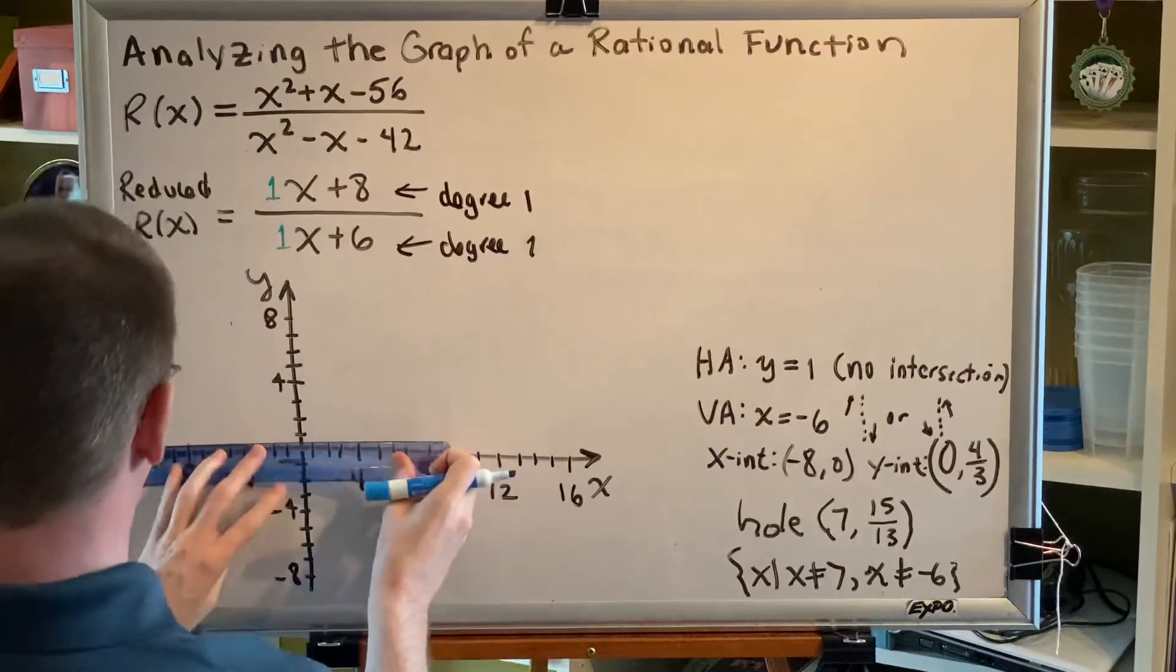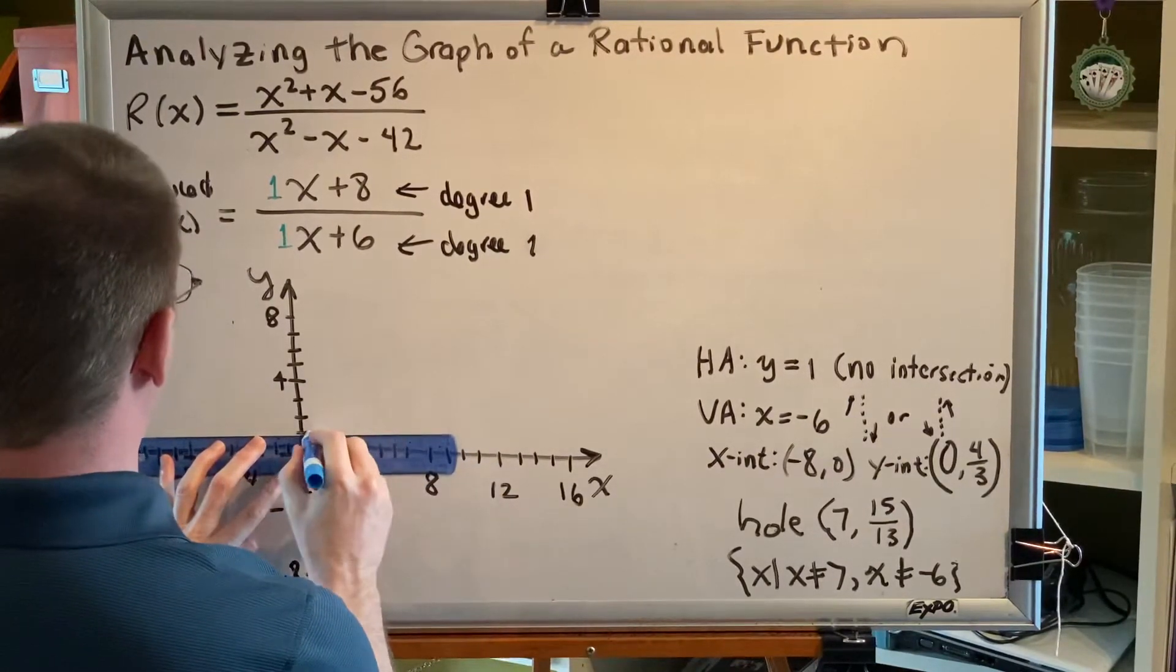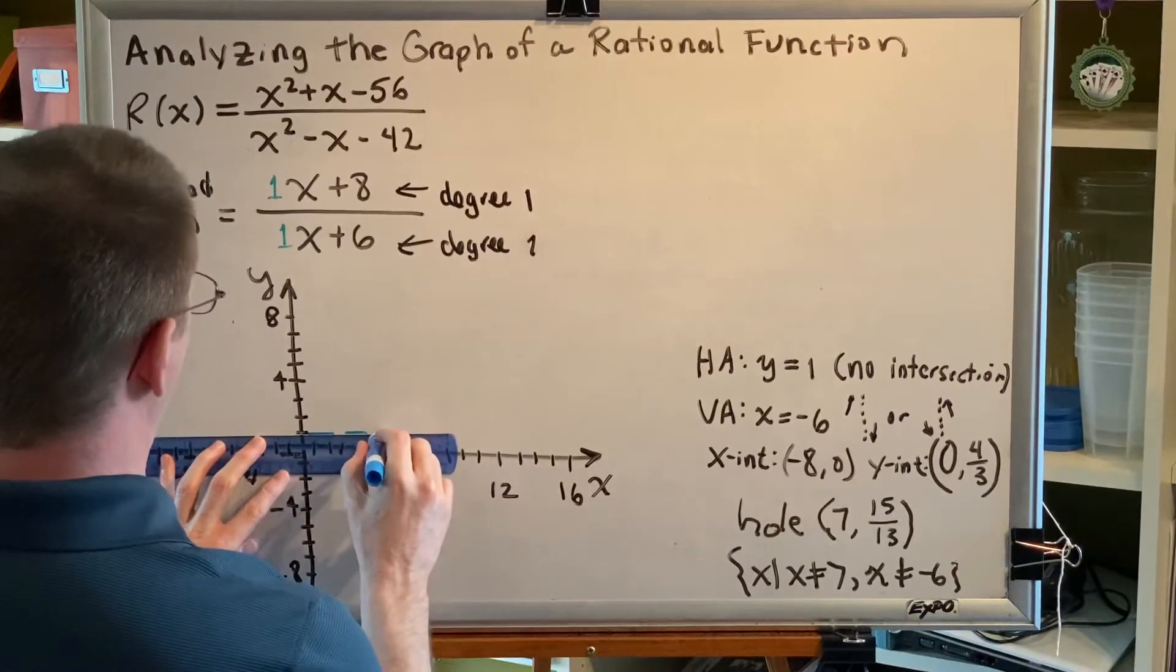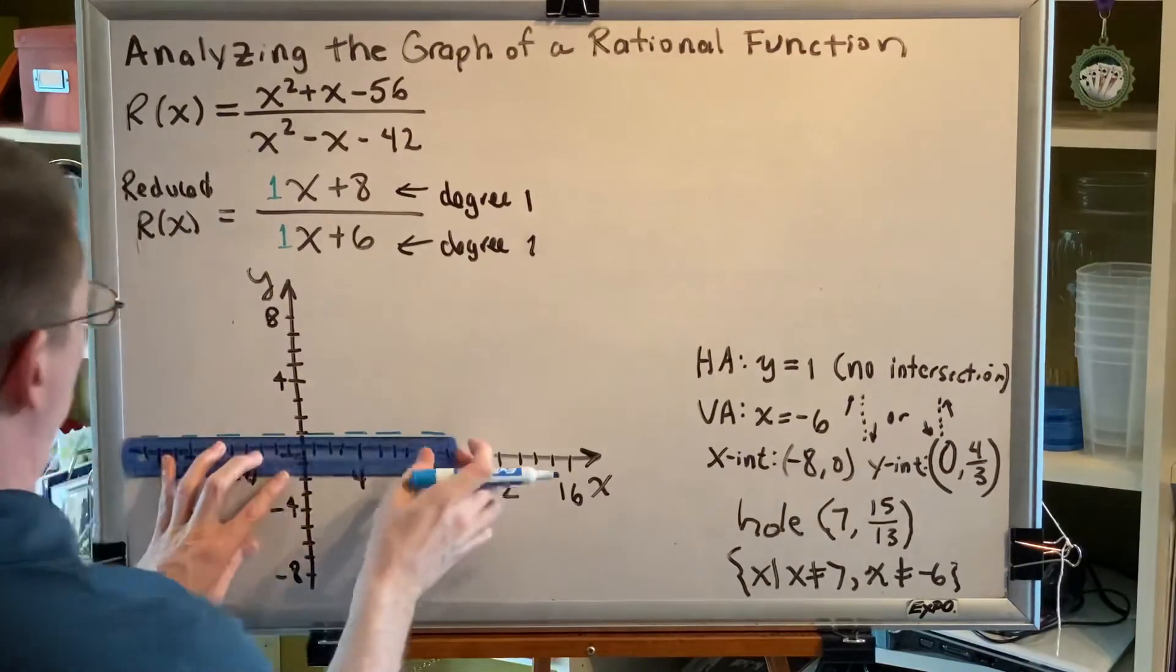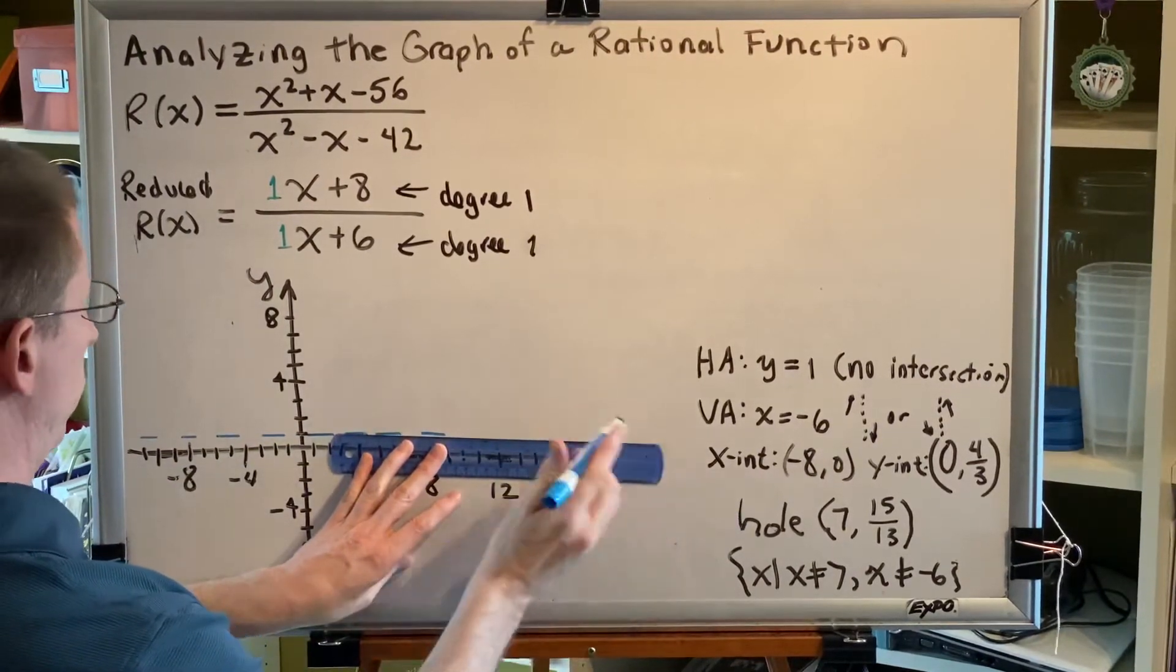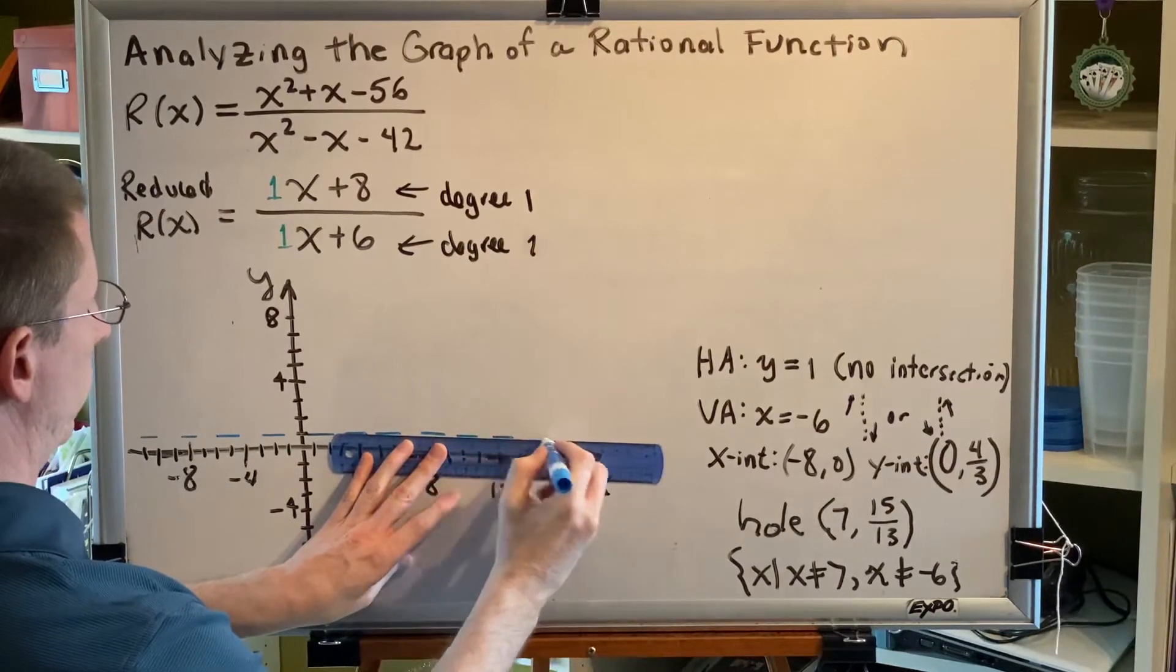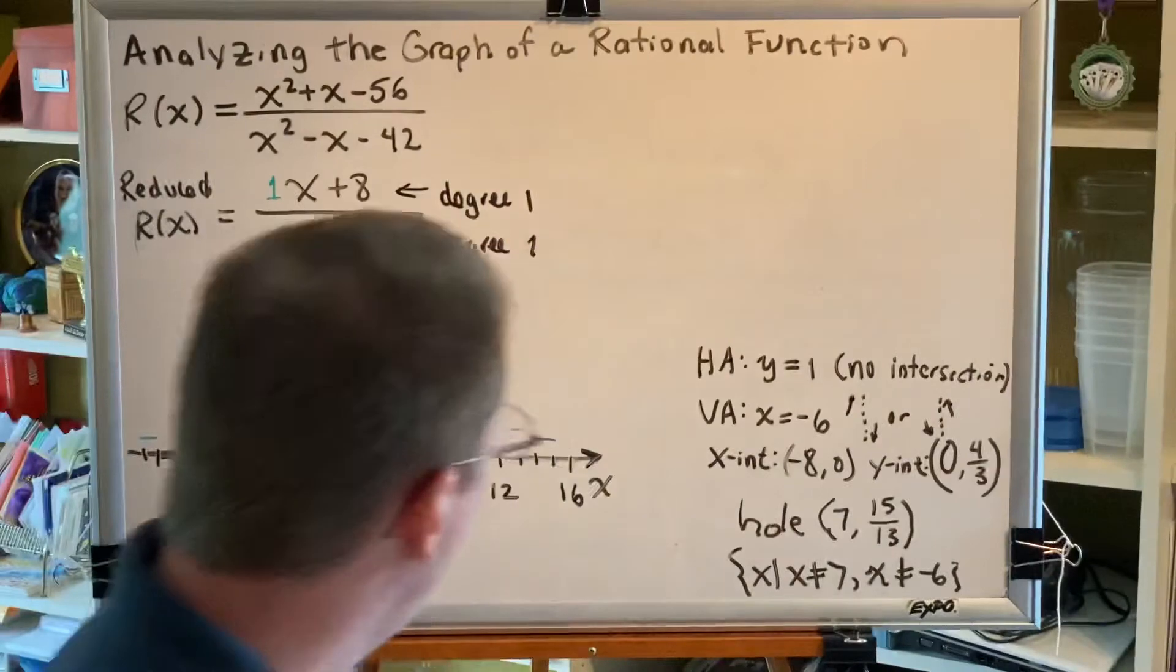So y equals 1 is our horizontal asymptote. Let's draw that in. Remember, a horizontal asymptote should be drawn using a dashed line type. And I'm going to have to shift my ruler here. There is our horizontal asymptote, y equals 1.